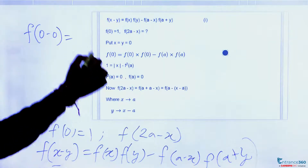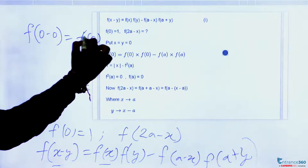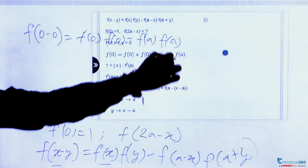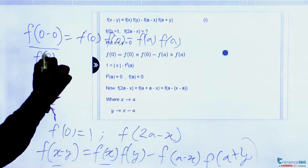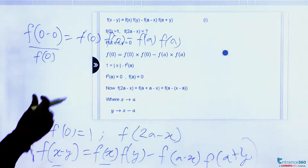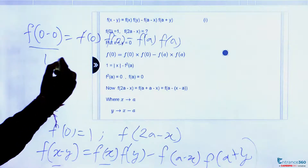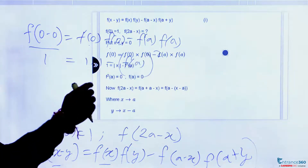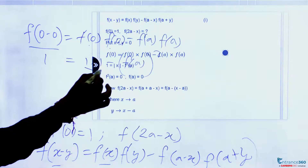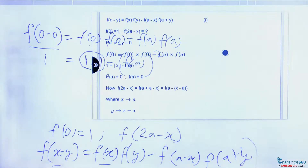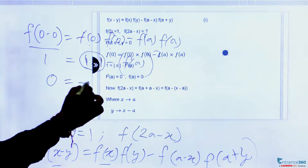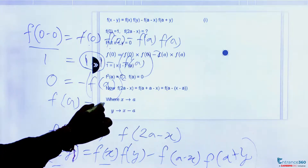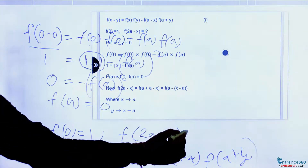Replacing x=0 and y=0 gives f(0-0) = f(0)·f(0) - f(a)·f(a). This simplifies to f(0) = [f(0)]² - [f(a)]². Since f(0) = 1, we get 1 = 1 - [f(a)]², which gives [f(a)]² = 0, so f(a) = 0.